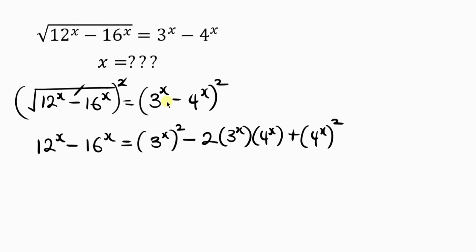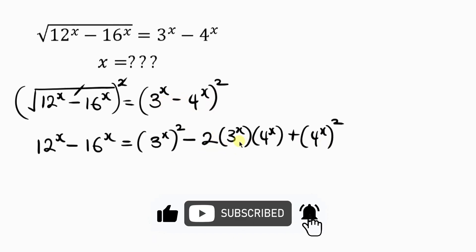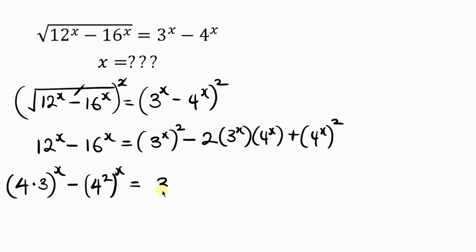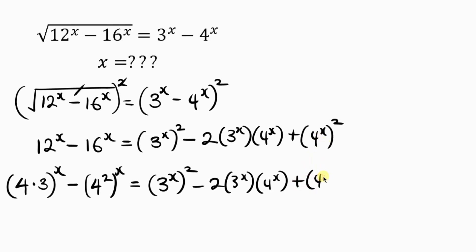This expansion is set up so we can split what we have on the left hand side. Since 12 to power x equals 4 times 3 raised to power x, and 16 to power x equals 4 squared raised to power x, the left hand side becomes: 4 to power x times 3 to power x, minus 4 to power x raised to power 2. The right hand side remains: 3 to power x raised to power 2, minus 2 times 3 to power x times 4 to power x, plus 4 to power x raised to power 2.